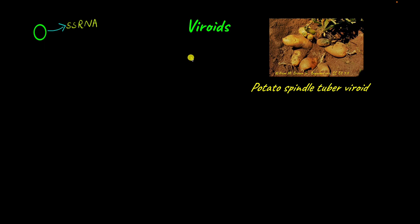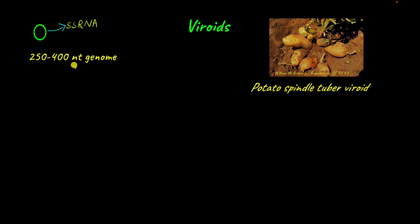We know that viroids are much smaller than viruses. Their entire single-stranded RNA is made up of just 250 to 400 nucleotides. For comparison, the SARS-CoV-2 virus, which caused the COVID pandemic, has about 30,000 nucleotides. This viroid has just 250 to 400 nucleotides — that comparison in itself should tell you just how small viroids are.